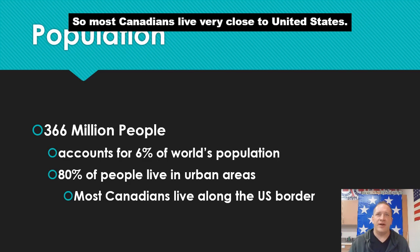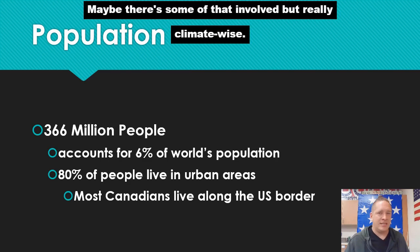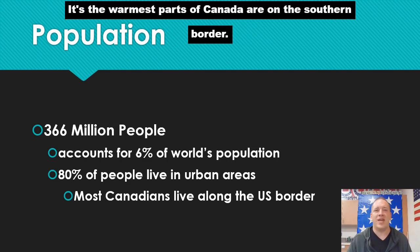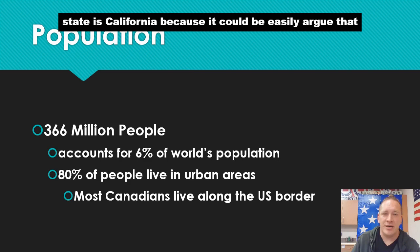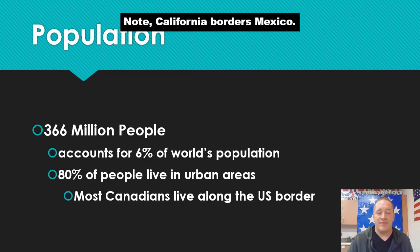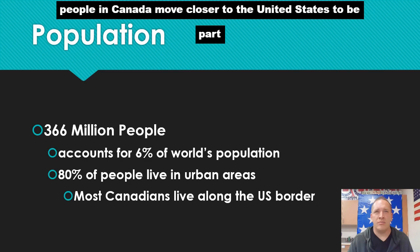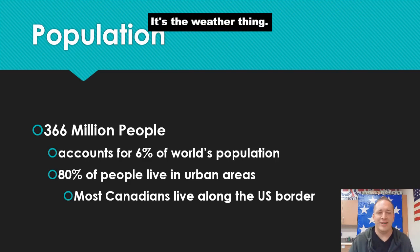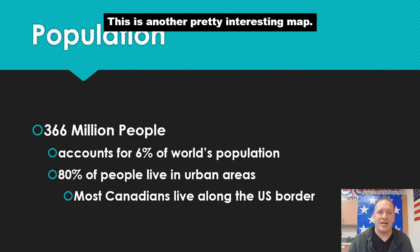So most Canadians live very close to the United States — don't get a big head about it. It's not because they're all infatuated with the United States. Really, climate-wise, the warmest parts of Canada are on the southern border. Think about it: our most populous state is California — it has the nicest weather and it borders Mexico, but nobody moves there to be closer to Mexico. It's a weather thing.